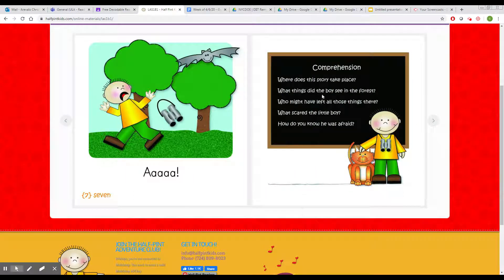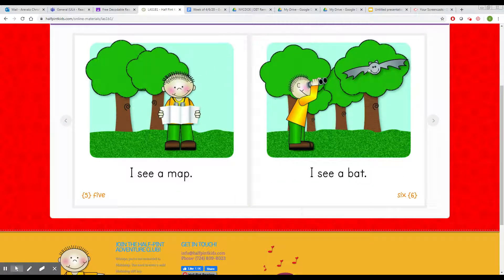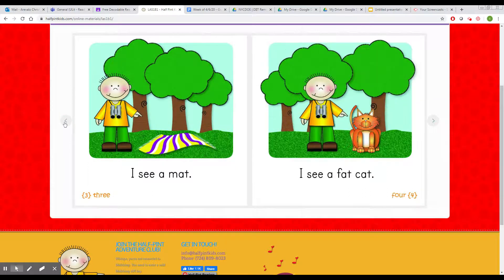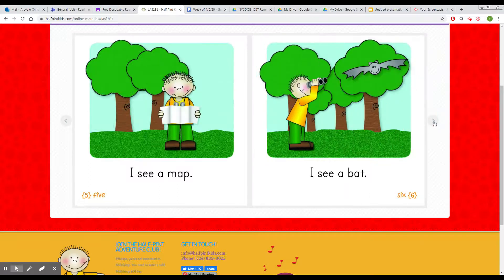What things did the boy see in the forest? Tell someone two things they saw in the forest. A map, a bat, a cat, a mat. Those are some things they saw.